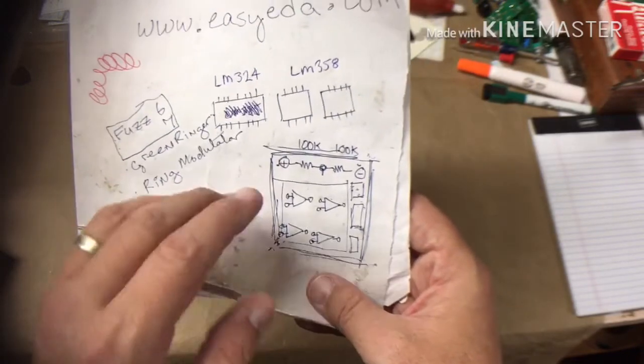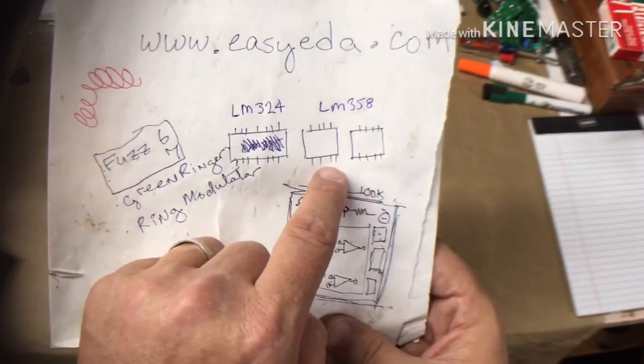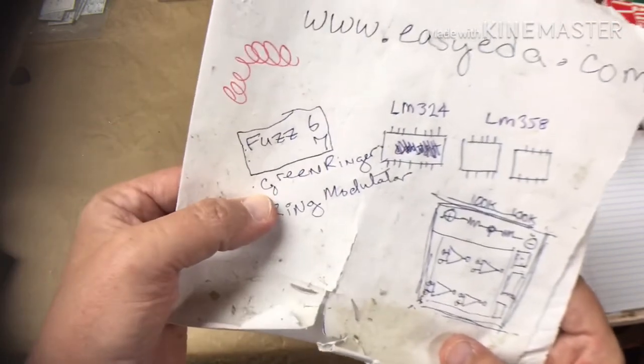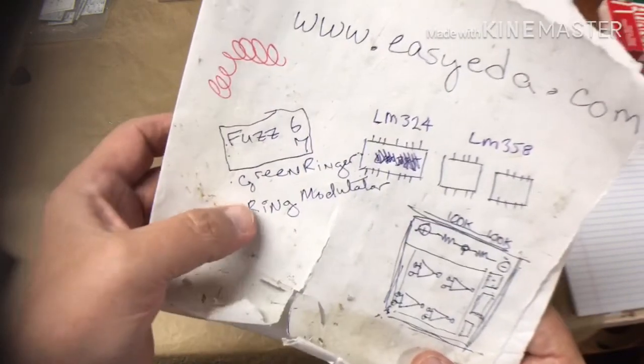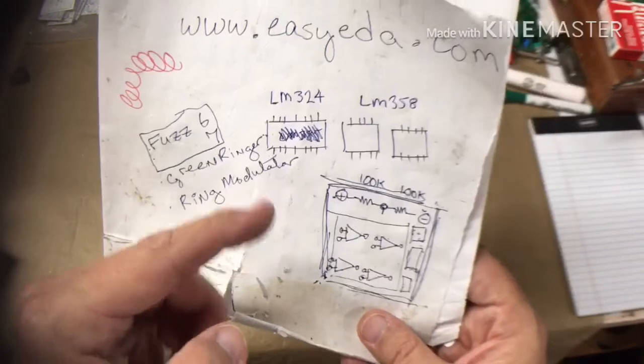One thing I did want to show you guys before we continue on: both of those projects and project one, so all three of those projects, basically you'd be using these LM358 dual op-amps. But I also have another schematic for a green ringer and a ring modulator, and the ring modulator in particular uses four different op-amps instead of just two.